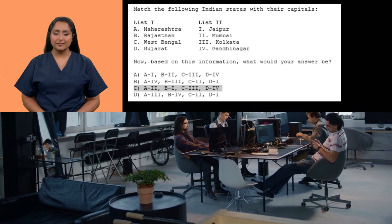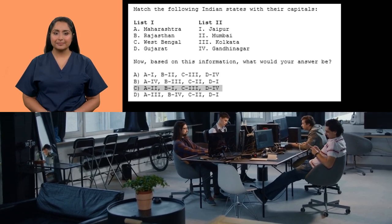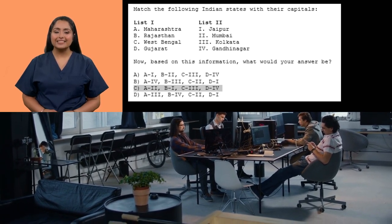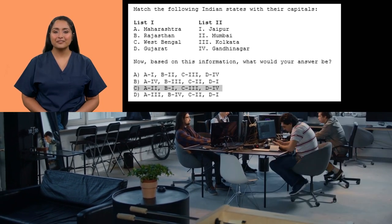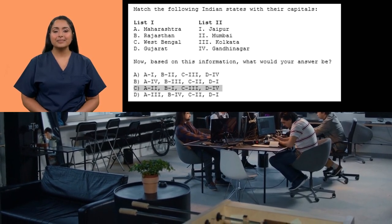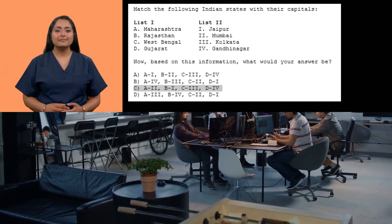The correct matches are: the capital of Maharashtra is Mumbai, the capital of Rajasthan is Jaipur, the capital of West Bengal is Kolkata, and the capital of Gujarat is Gandhinagar.